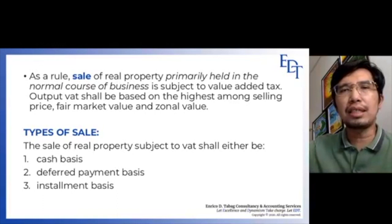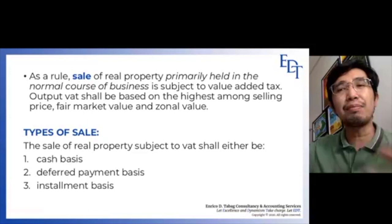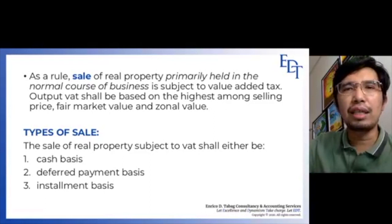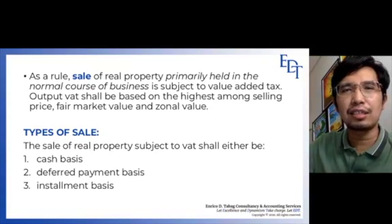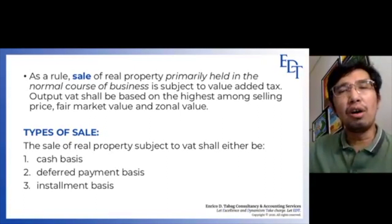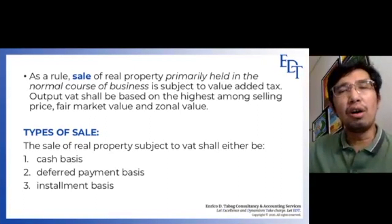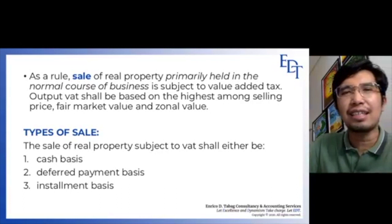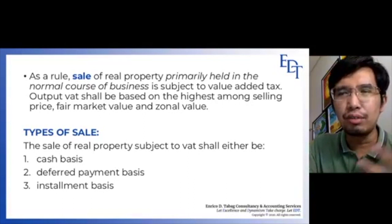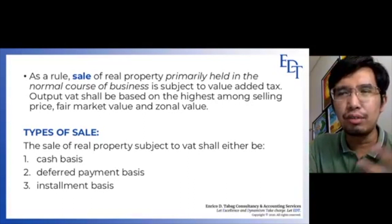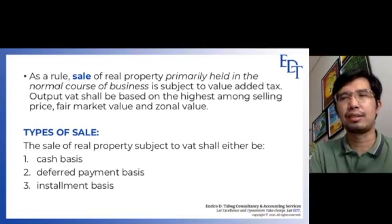In previous videos, the basis for VAT on sale of goods is gross sales, and for sale of services it is gross receipts. However, with respect to real properties, the basis will be the selling price, or the fair market value provided by the city or provincial assessors (also called assessed value, used for computing real property tax at the LGU), or the zonal value as provided by the BIR — whichever is the highest among those figures. That will be the basis of the 12% VAT.